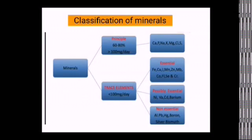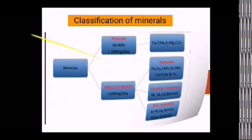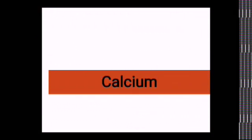The possibly essential trace minerals include nickel, vanadium, cadmium, and barium. The non-essential trace elements include aluminium, lead, mercury, boron, silver, and bismuth. This completes the classification of minerals. Today we will start with calcium metabolism.